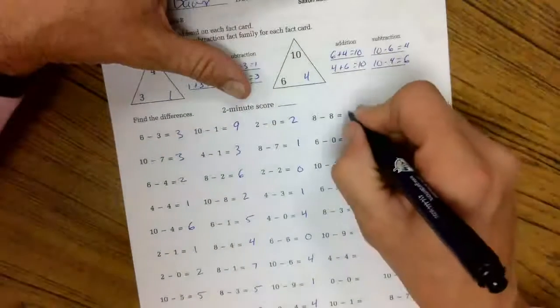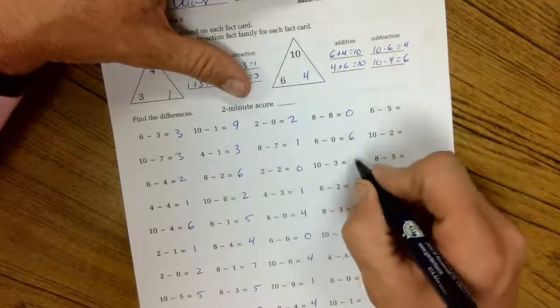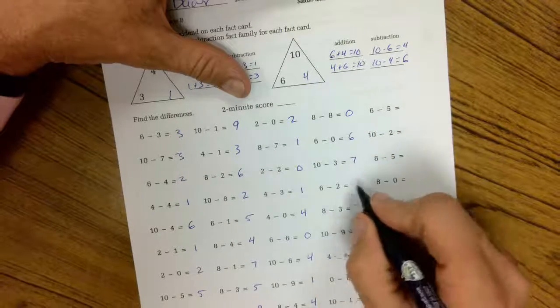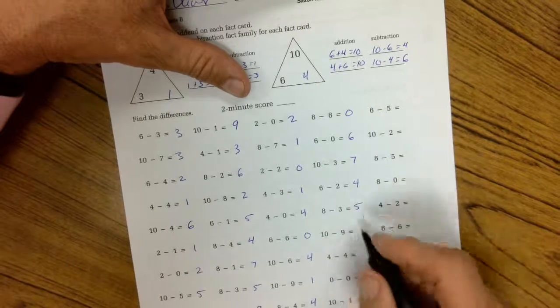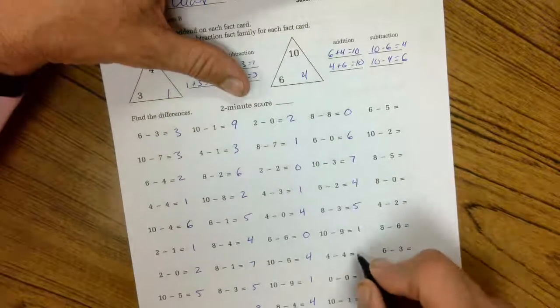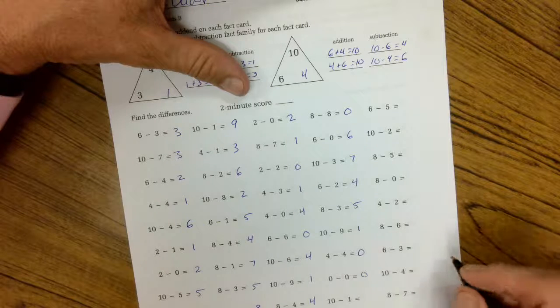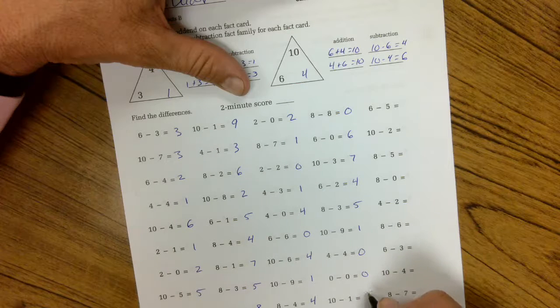8 minus 8 is 0. 6 minus 0 is 6. 10 minus 3 is 7. 6 minus 2 is 4. 8 minus 3 is 5. 10 minus 9 is 1. 4 minus 4 is 0. 0 minus 0 is 0. 10 minus 1 is 9.